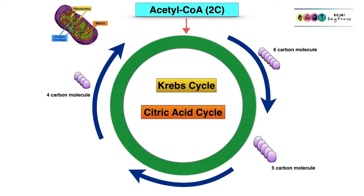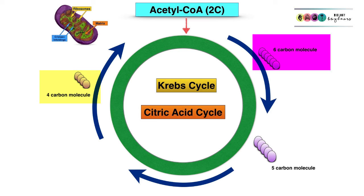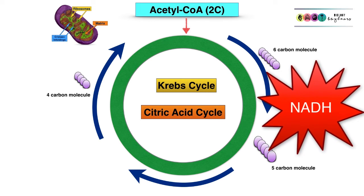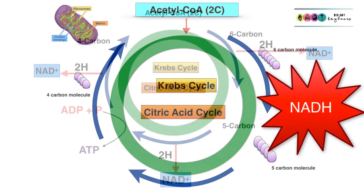Acetyl-CoA, this two-carbon molecule made in the link reaction — we have two of them, but we'll discuss one — is still in the mitochondria and now enters Krebs cycle, also known as the citric acid cycle. Here it combines with a four-carbon molecule to make a six-carbon molecule. This six-carbon molecule is broken down: first to a five-carbon molecule by releasing carbon dioxide, then to a four-carbon molecule by again releasing carbon dioxide. In the process we make NADH, which is the main purpose of Krebs cycle.